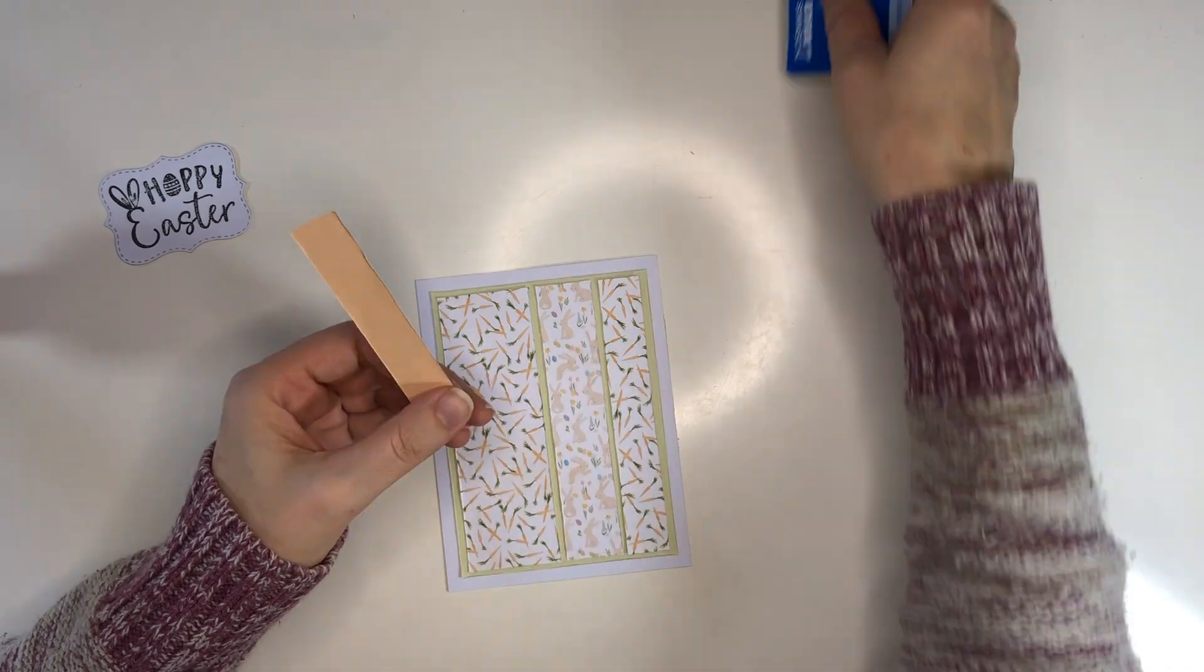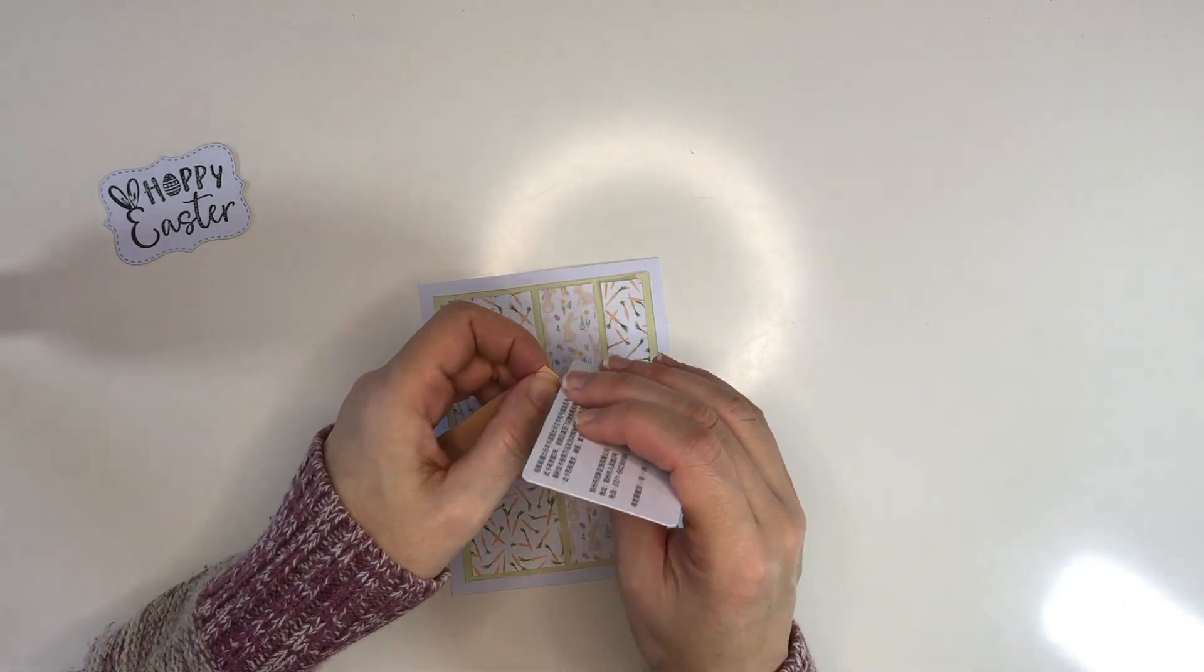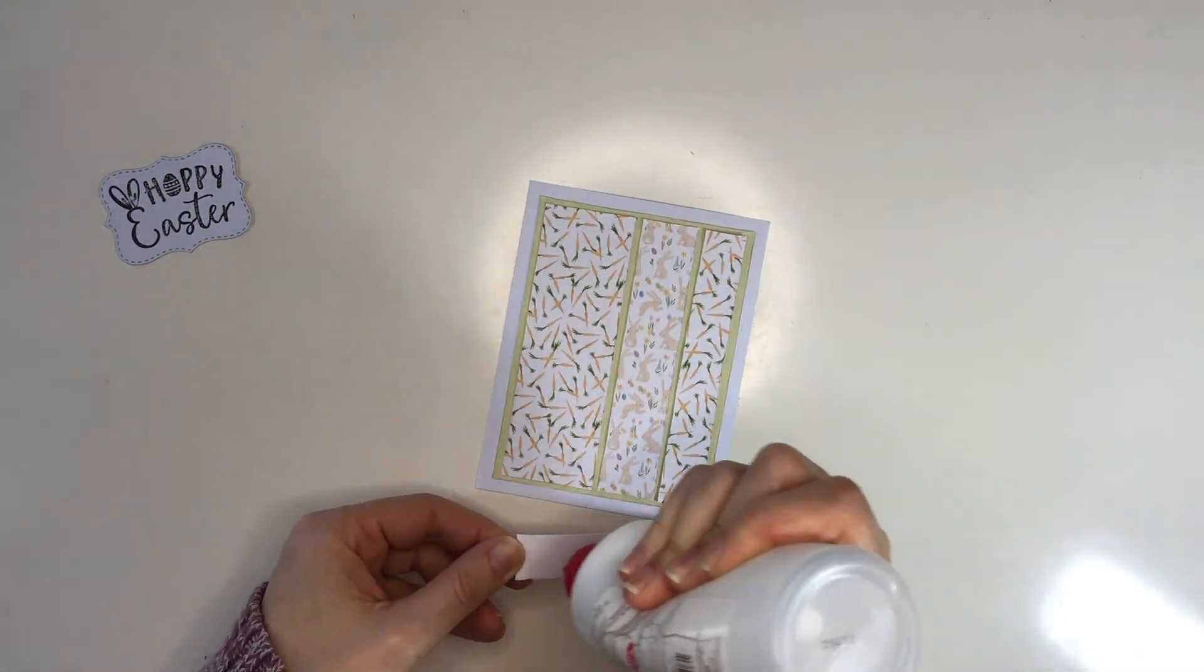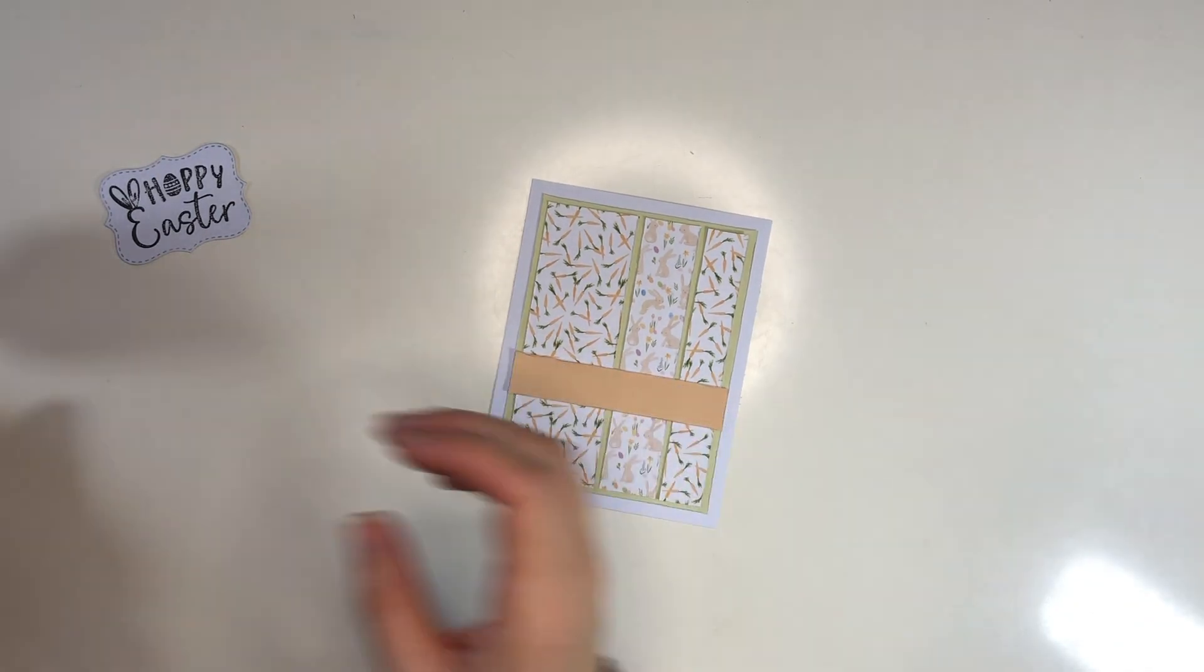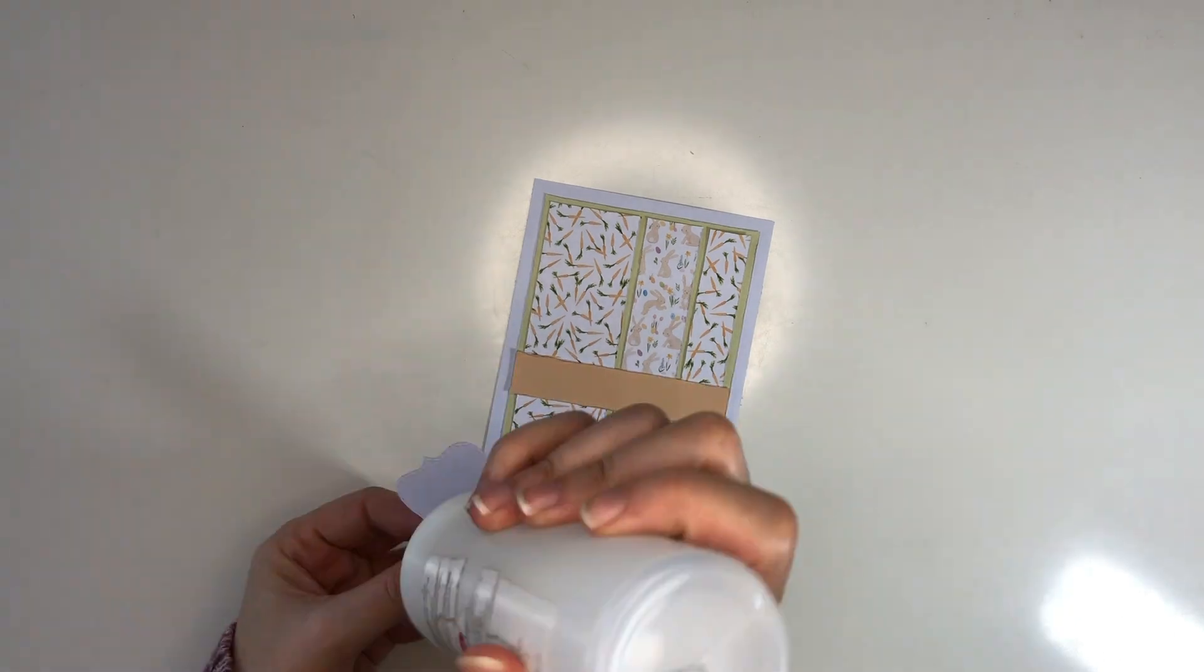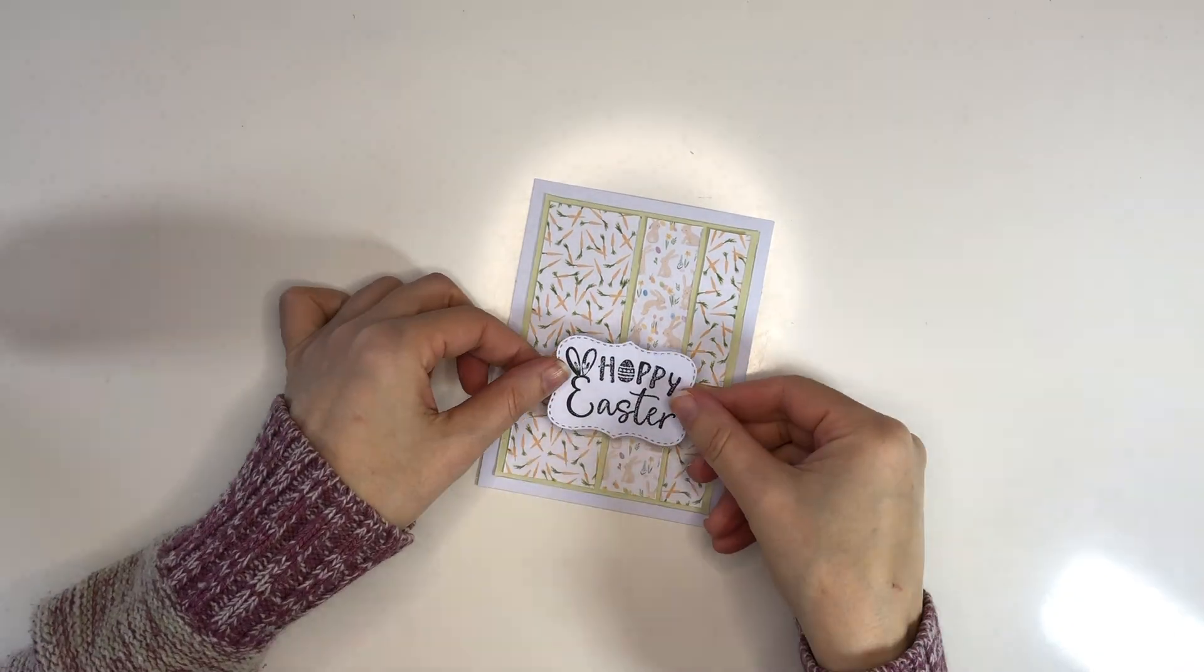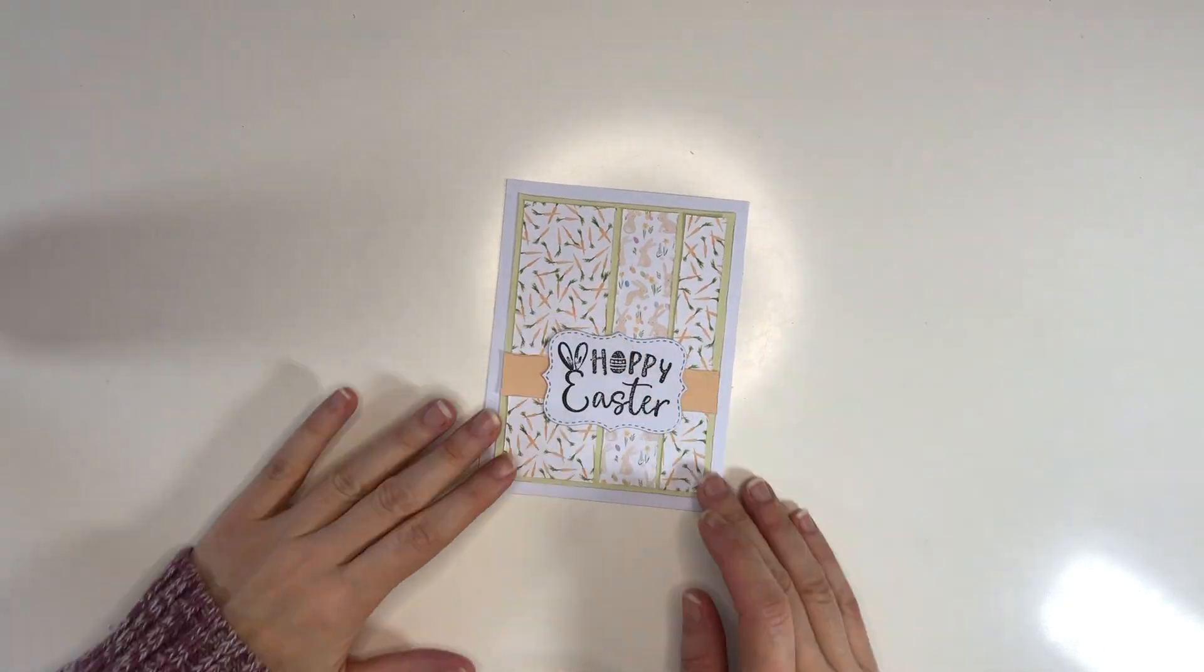I've stamped the sentiment and then used one of my label dies to cut it out. That finishes this card basically. You see I just ran a card along the edge to distress everything because that makes everything pop off the page a lot better.